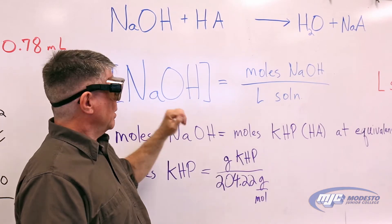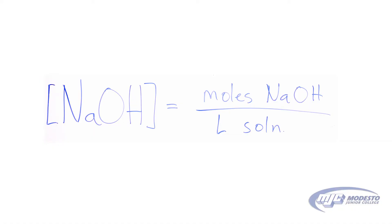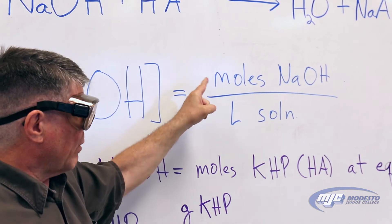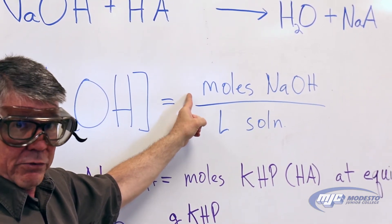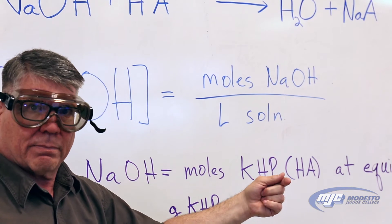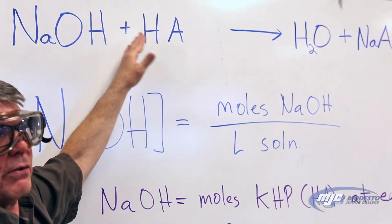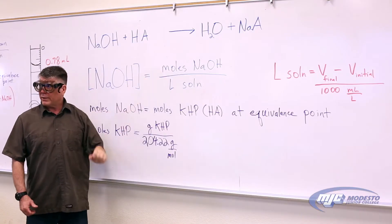In the first part, our goal is to determine the concentration of sodium hydroxide in our stock solution. Molarity is equal to the moles of the solute divided by the liters of solution, and here the solute is sodium hydroxide. What I just described is how we find out how many moles of sodium hydroxide we added to that acid — by finding moles of acid and setting that equal to the moles of sodium hydroxide.